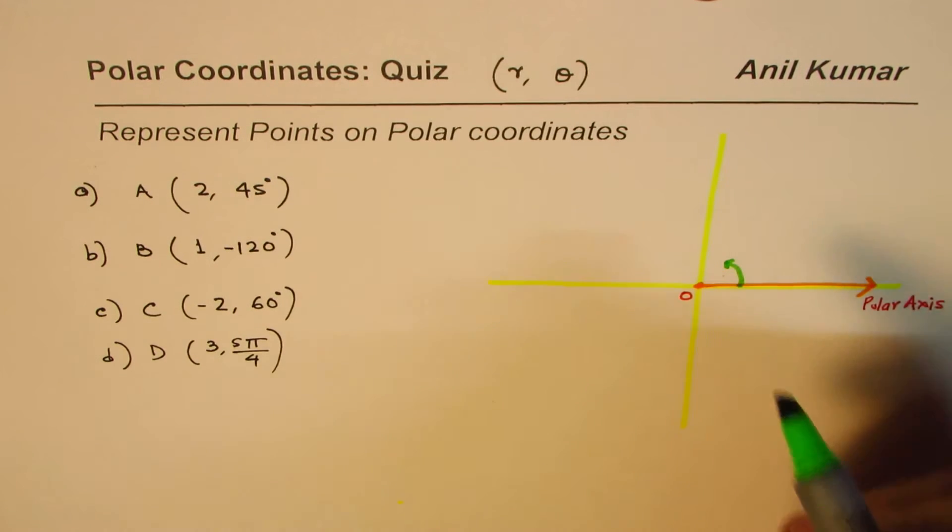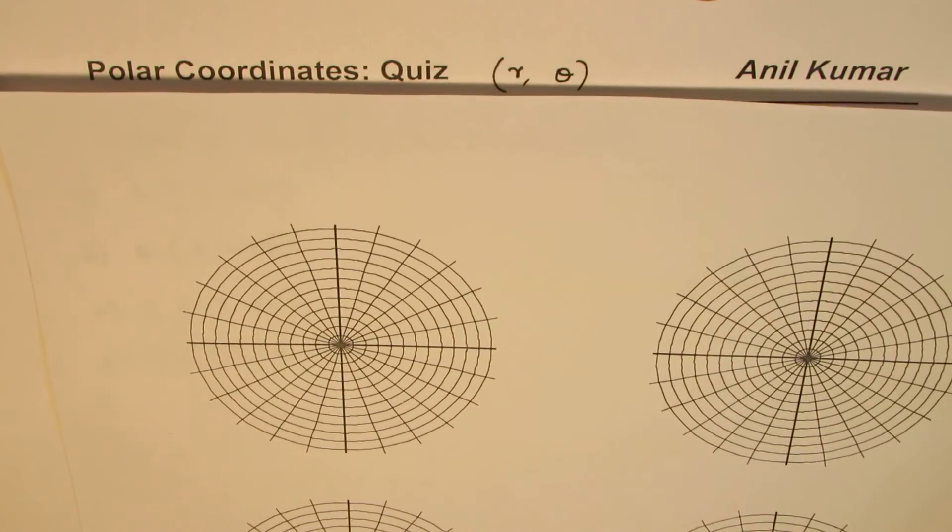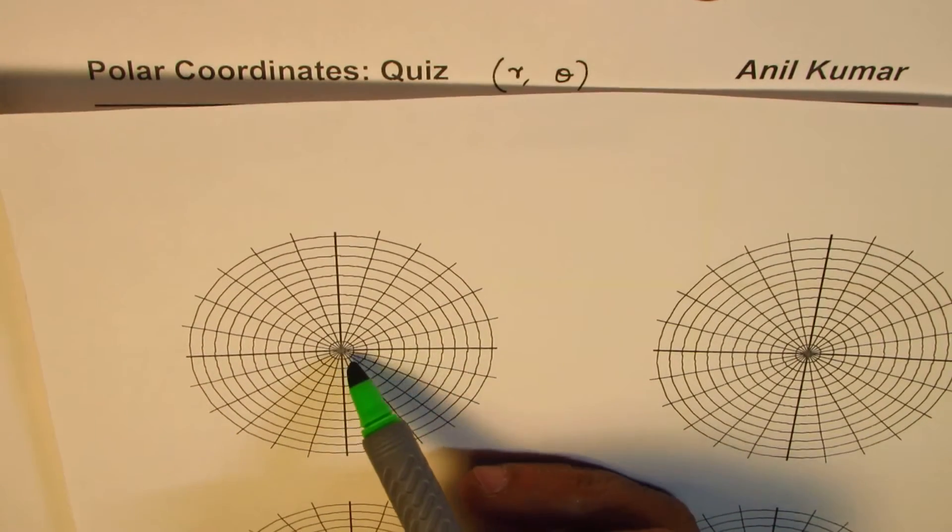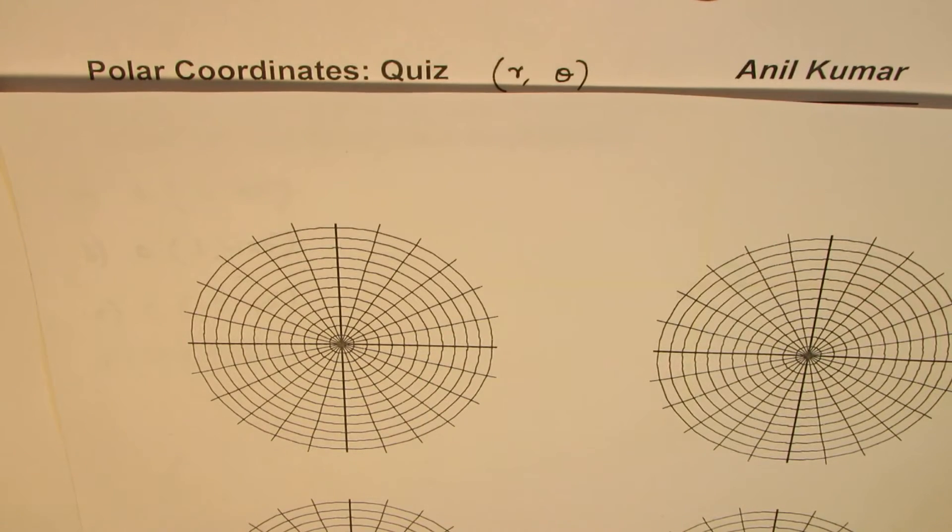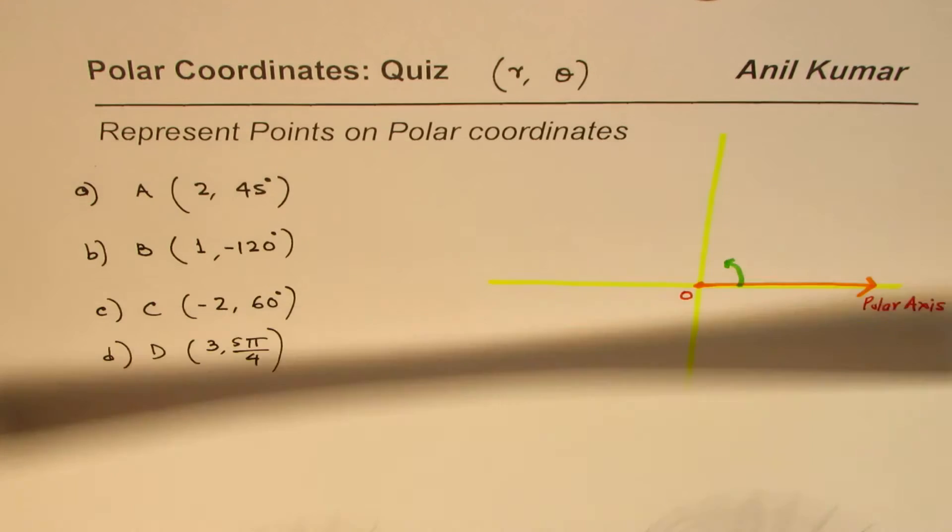In our case, the angle is 45 degrees, so from here positive 45 means it'll go counterclockwise 45 degrees, and a magnitude of 2. Normally you will do this on a graph paper which looks like this.